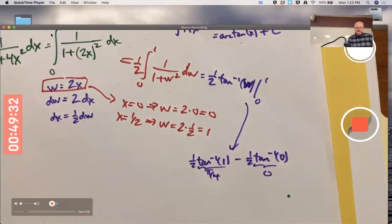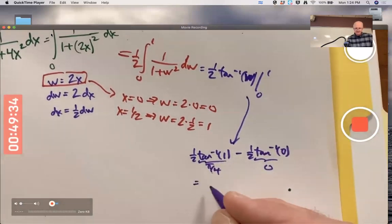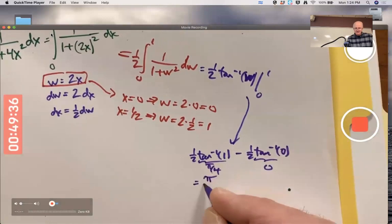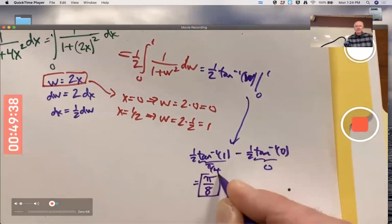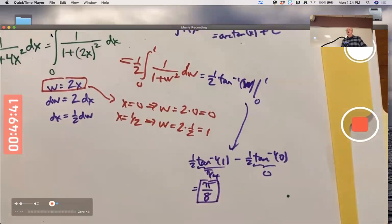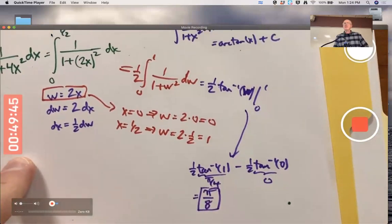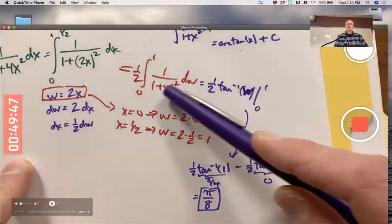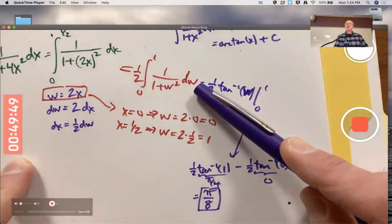That's going to be ½ inverse tangent of 1 minus ½ inverse tangent of 0. These are inverse tangent values you should have memorized. Inverse tangent of 0 is 0. Inverse tangent of 1 is π/4 - 45° is an angle where tangent equals 1. So the final answer is π/8 - 0, which is just π/8.